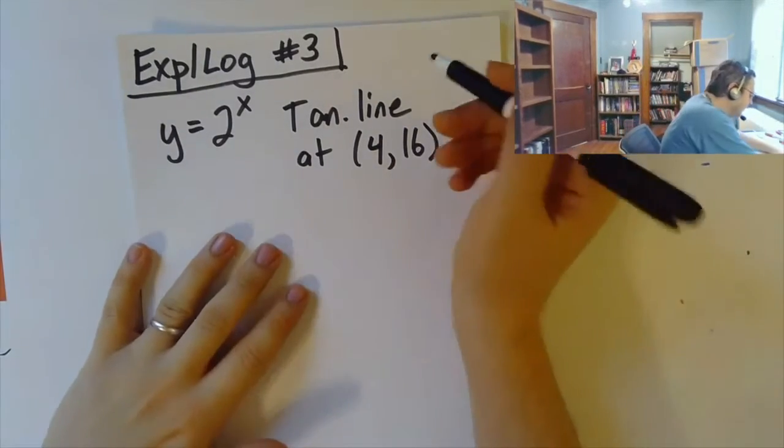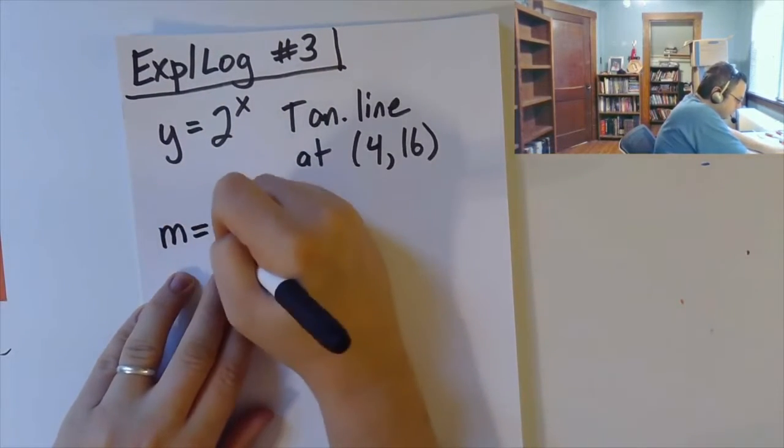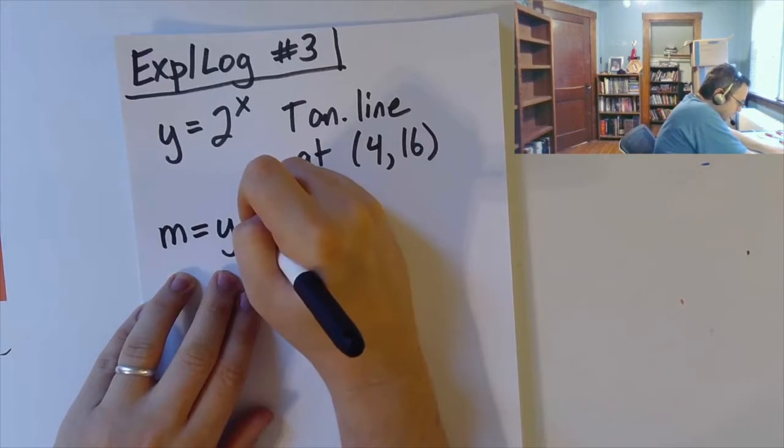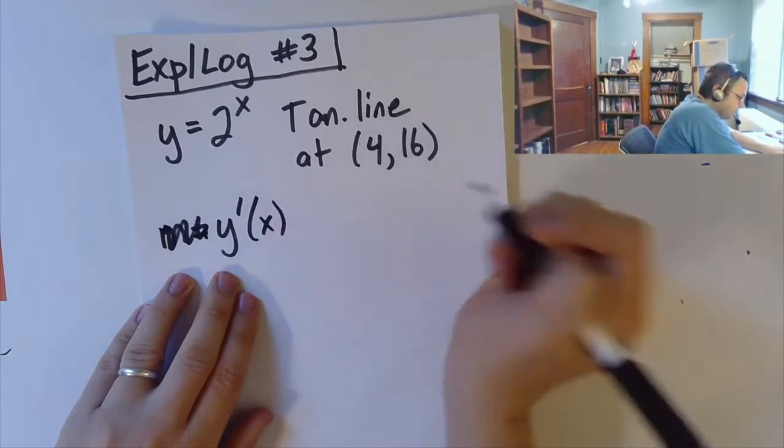Okay, so again here we need to start by finding the slope. So m here is going to be, sorry, we need to just find the derivative before we find the slope.